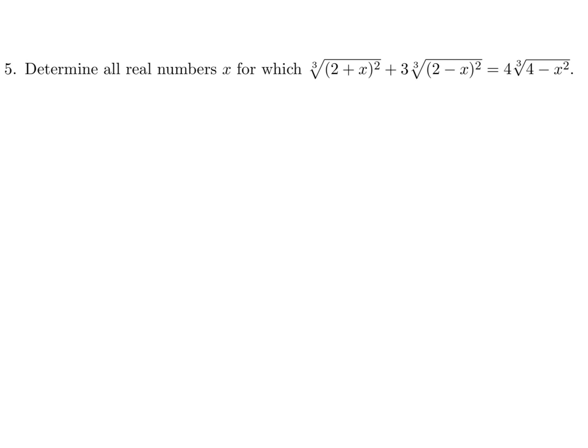Determine all real numbers x for which the cube root of (2 + x²) plus 3 times the cube root of (2 − x²) is equal to 4 times the cube root of (4 − x²).